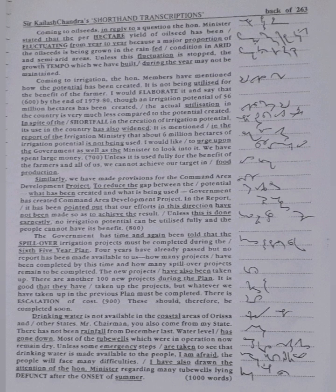Coming to oil seeds, in reply to a question, the honourable minister stated that the per hectare yield of oil seed has been fluctuating from year to year because a major proportion of the oil seeds is being grown in the rain-fed condition in arid and semi-arid areas. Unless this fluctuation is stopped, the growth tempo which we have built during the year may not be maintained.